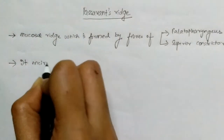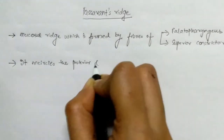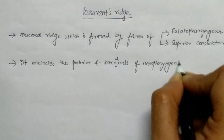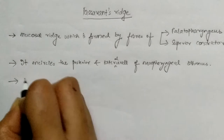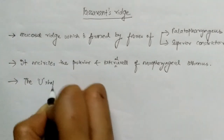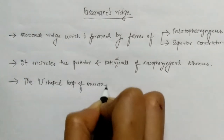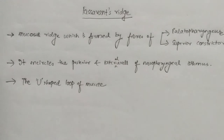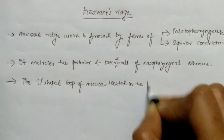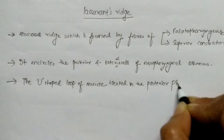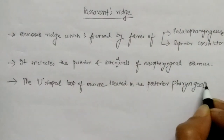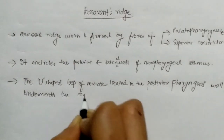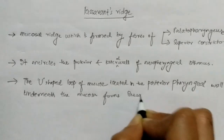It encircles the posterior and lateral wall of the nasopharyngeal isthmus. The U-shaped loop of muscle, which is formed by the fusion of these two muscles — palatopharyngeus and superior constrictor — is located in the posterior pharyngeal wall underneath the mucosa, and forms Passavant's ridge.